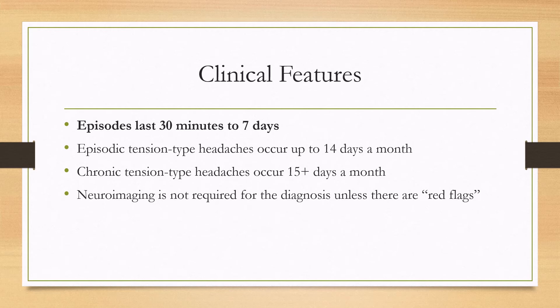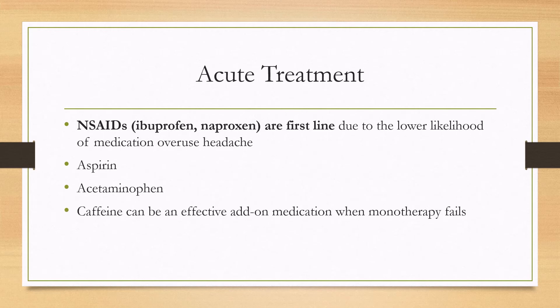For acute abortive treatment, NSAIDs are the treatment of choice — specifically ibuprofen and naproxen — because you want to reduce the chance of causing medication overuse headache. Aspirin and acetaminophen can also be used. If monotherapy with any of the above is ineffective, caffeine can be added as an adjunctive medication.